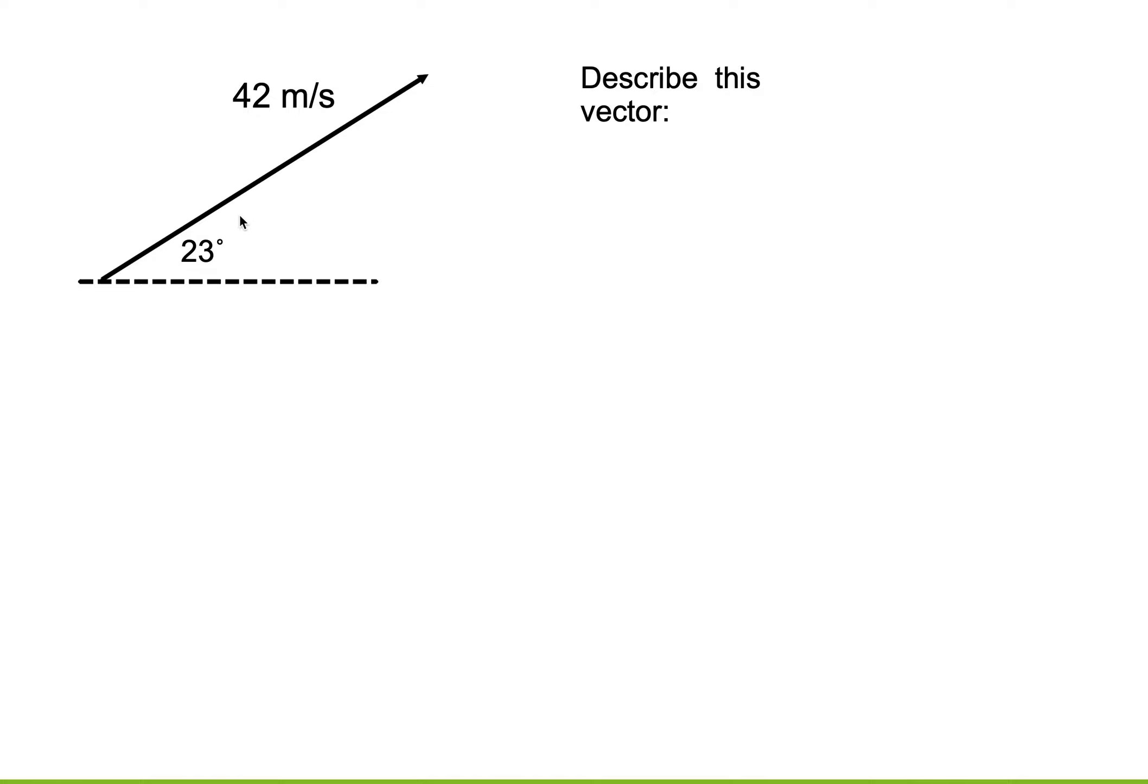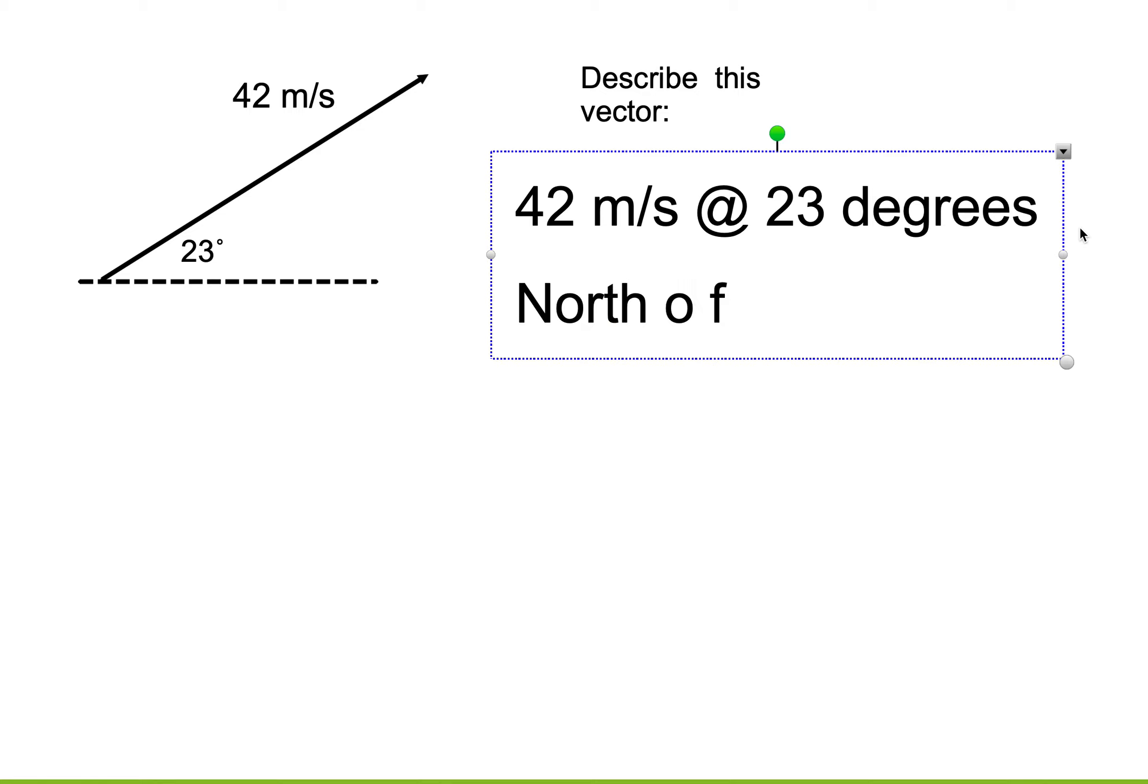It's going 23 degrees, and it's going north of east. So if I was going to describe this vector, I would say that this vector was 42 meters per second at 23 degrees north of east.